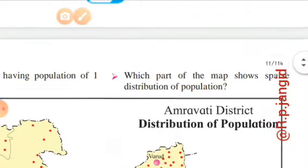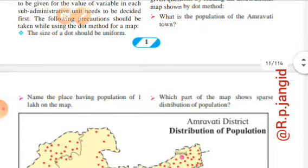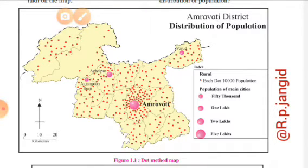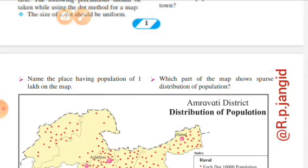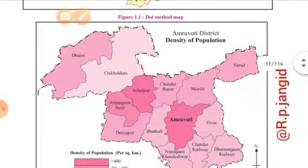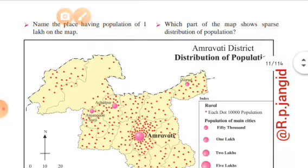Third question: which part of the map shows the sparse distribution of population? Sparse ka matlab hai bikhre hue — dense ka matlab zyada log, sparse mein ek dam bikhre hue log. Map ke north, south, east, west dekhein — east mein zyada, center mein bhi zyada, west mein bhi zyada, south mein bhi zyada. The northern part of the map shows the sparse distribution of population. So this variety is the dot method — and in the next lecture we are going to study the chloropleth method.